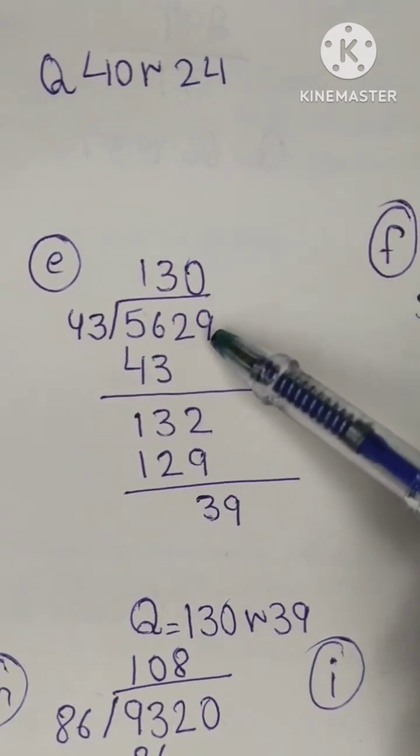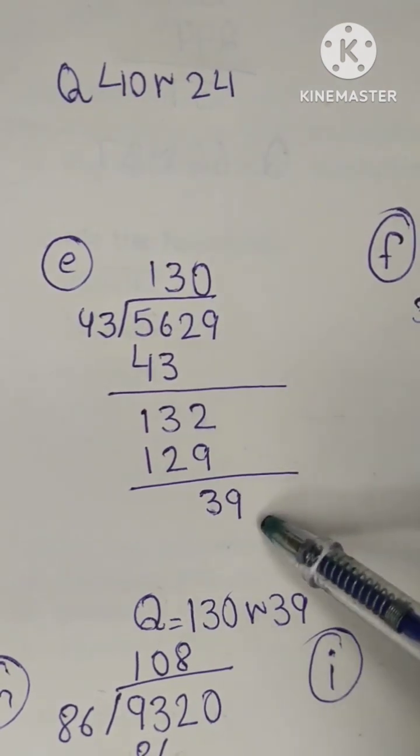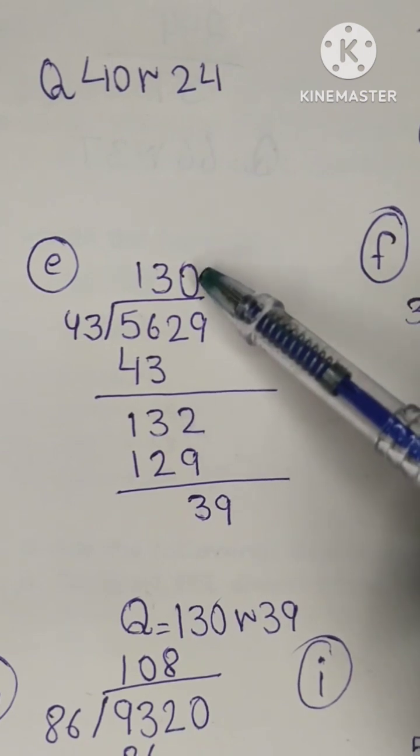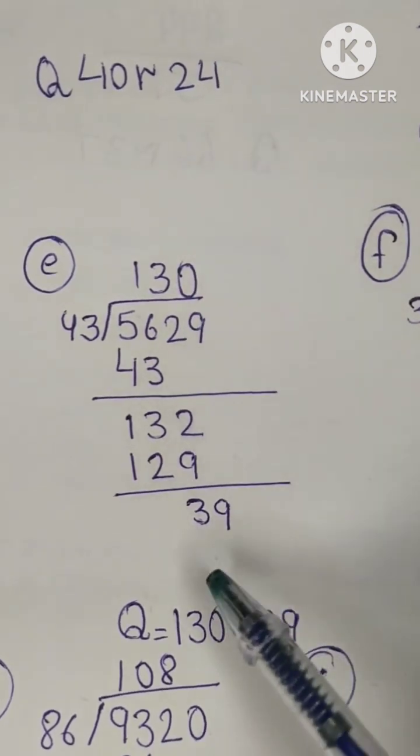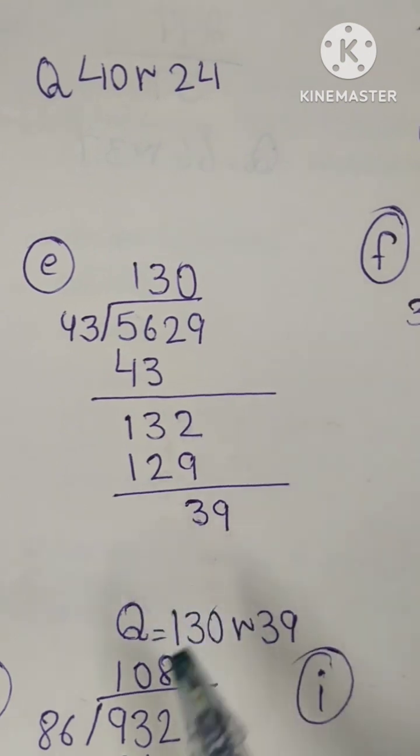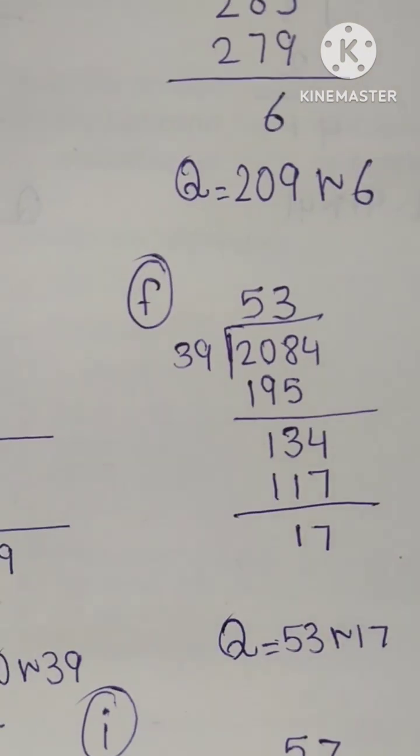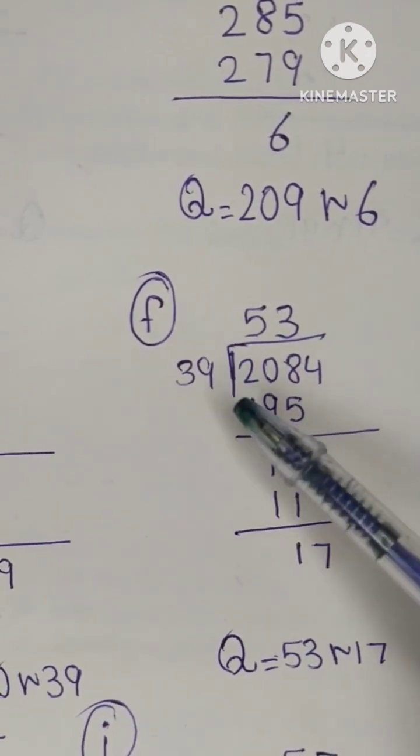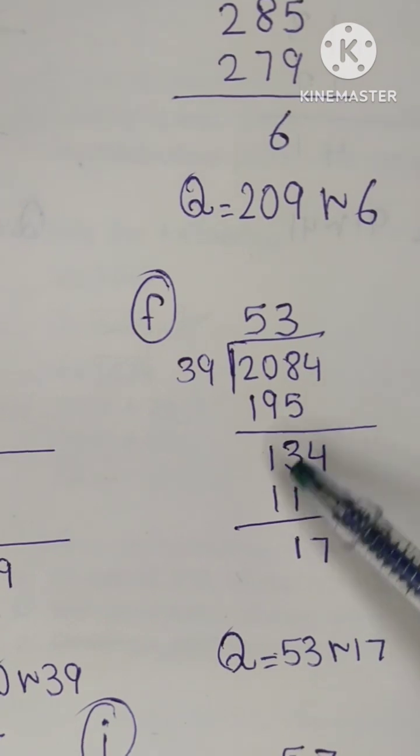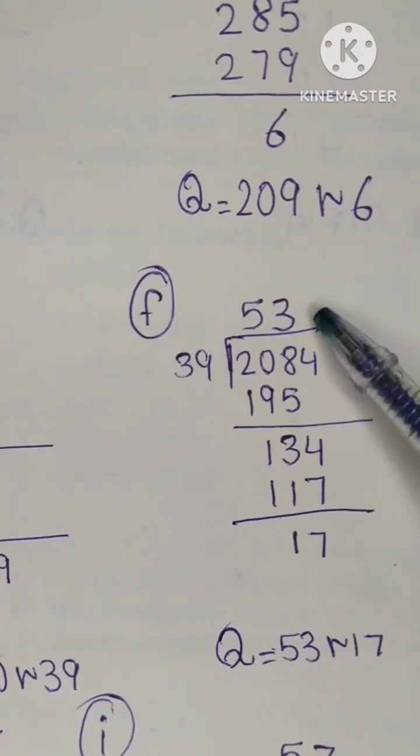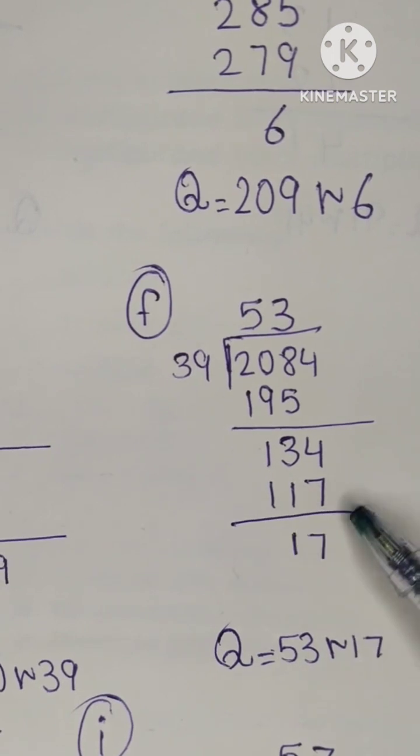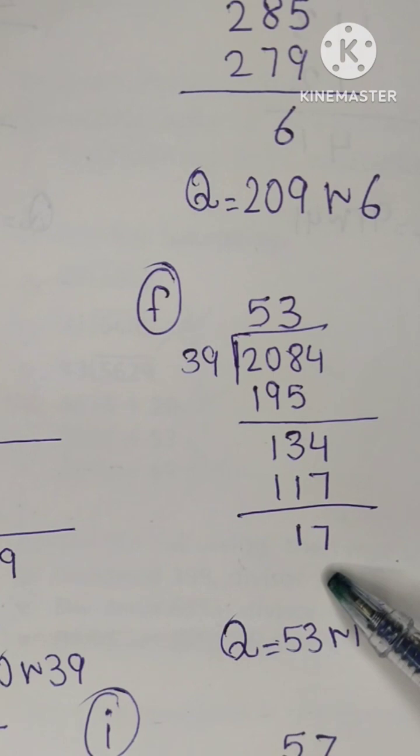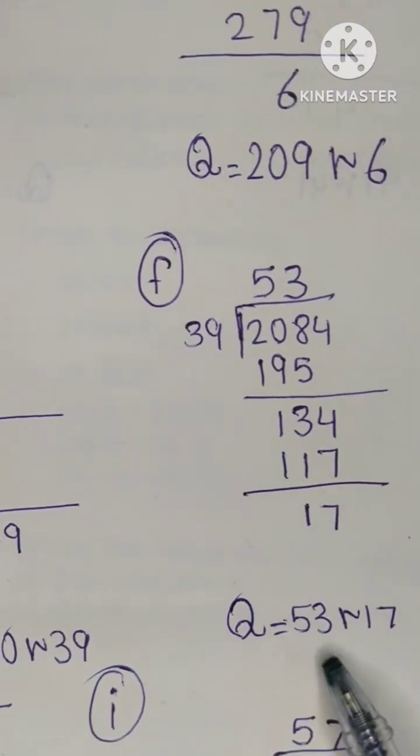When we have no value here to increase this value, we will simply write 0 and the answer is 39 remainder. Our next question is 2084 and 39 is divisor, 195 divided. We divide, 13... 4 drop, 39 multiply and 134, 117 minus, 17 as remainder.